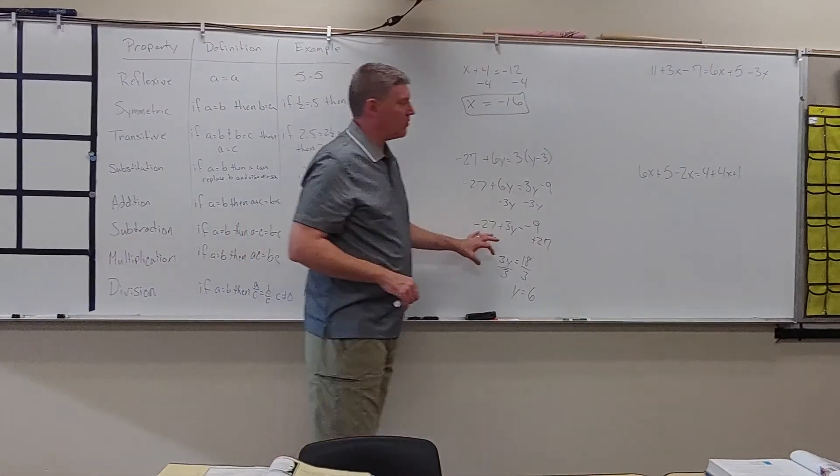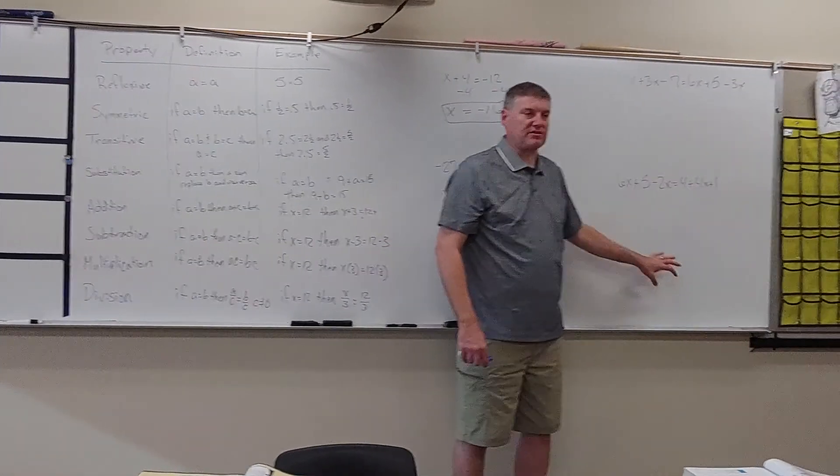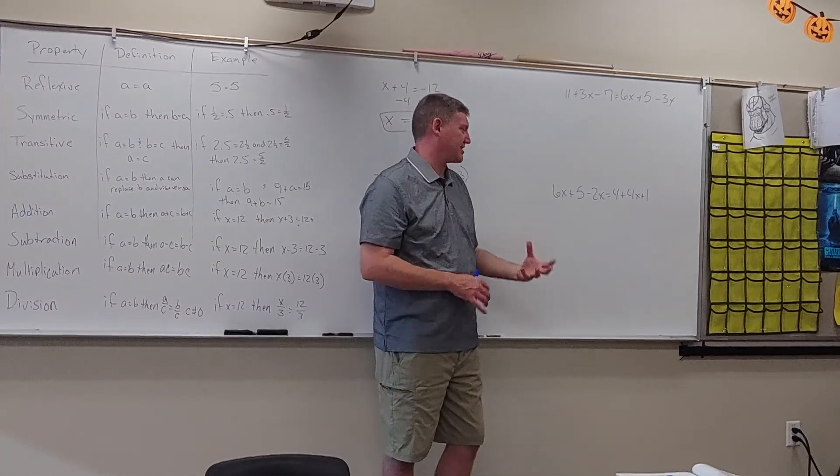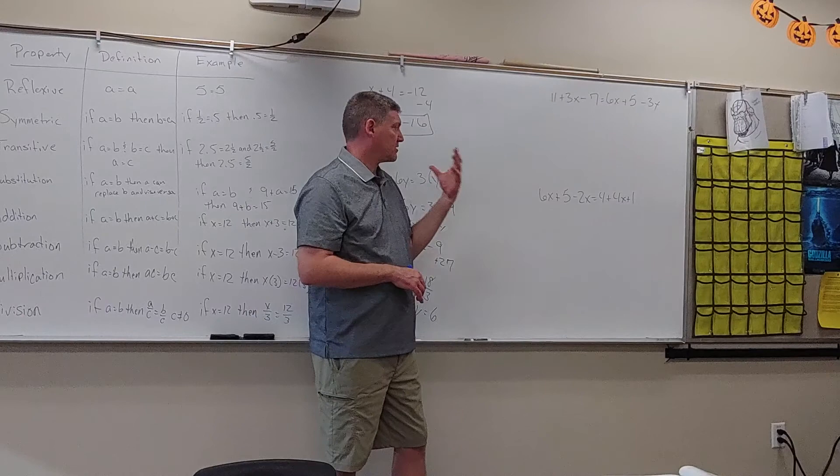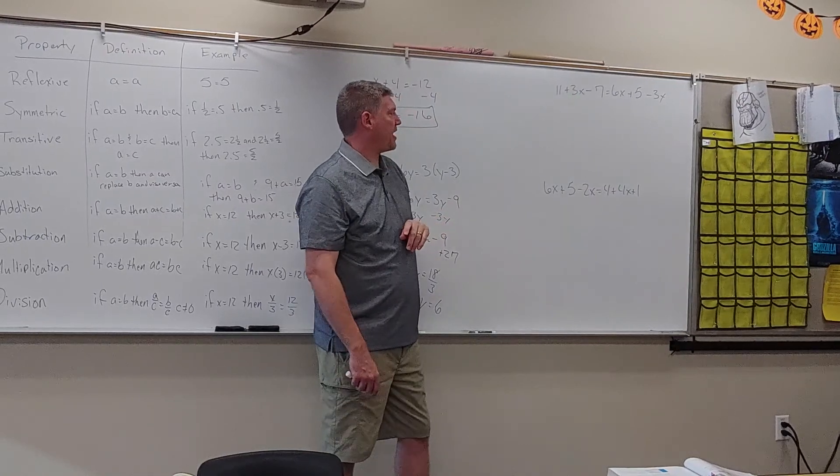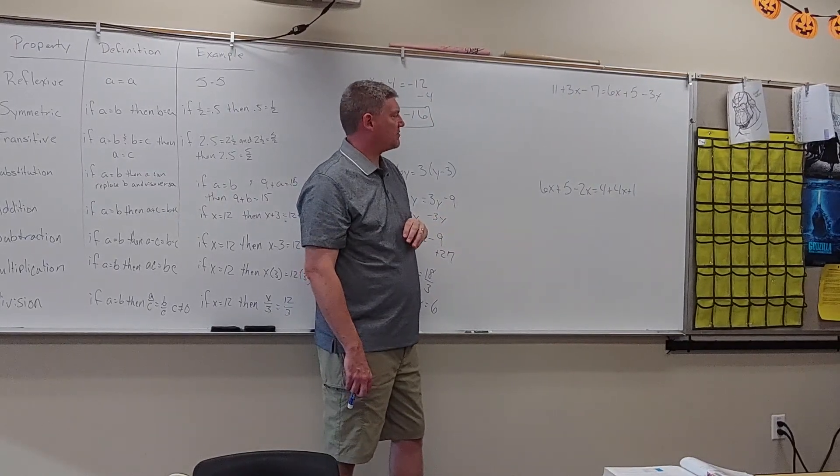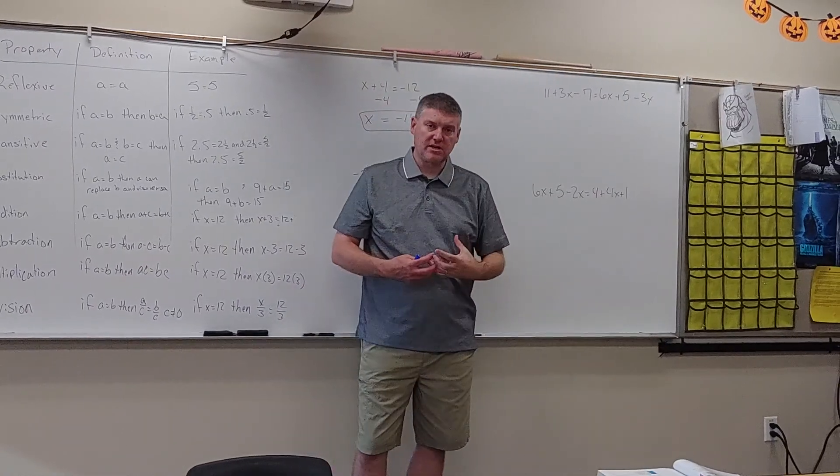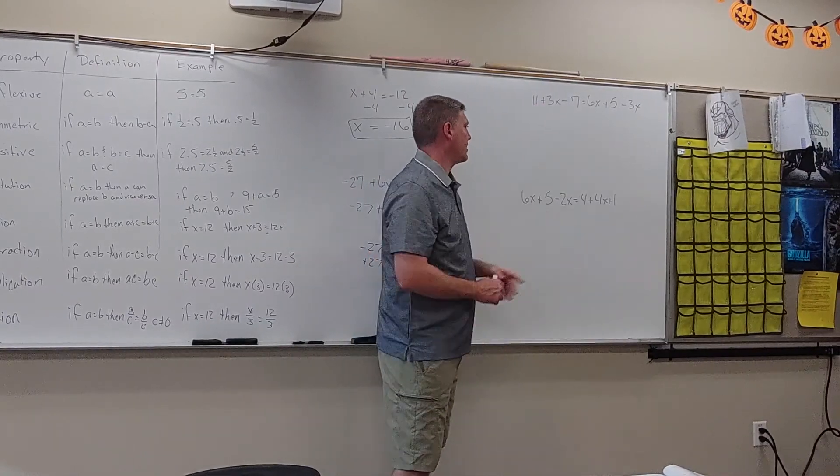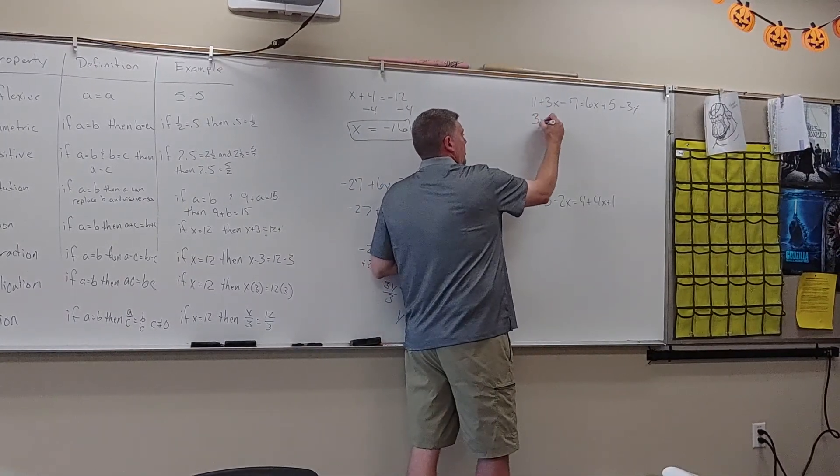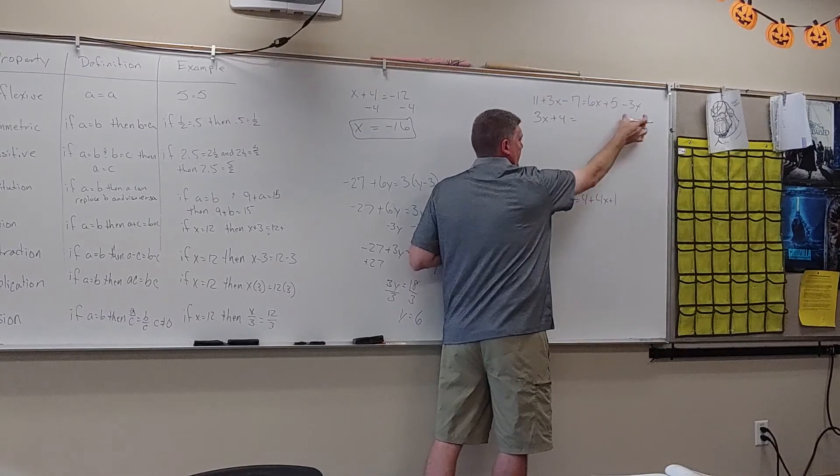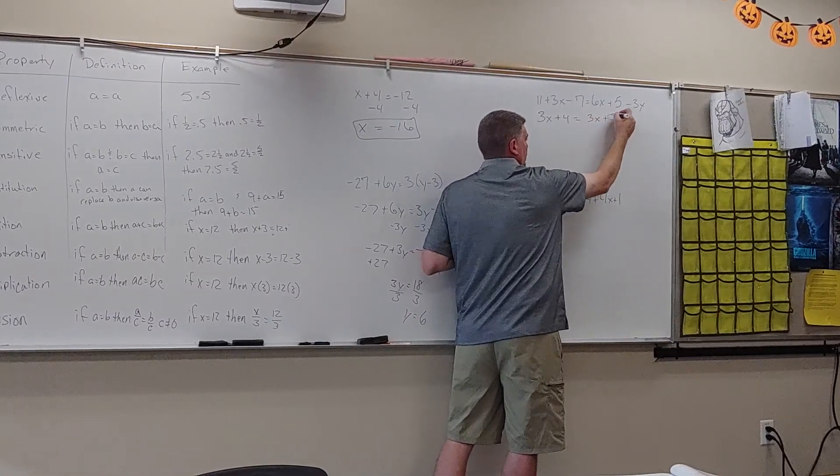Now, these aren't the only type of problems we have. Sometimes we have problems where we don't have a solution or we have infinitely many solutions. So we're going to take a look at those and talk about what happens in them. Here's our first problem. We have 11 plus 3X minus 7 equals 6X plus 5 minus 3X. The first thing I'm going to do is simplify each side by combining like terms. I have 11 and minus 7, which gives me 3X plus 4.